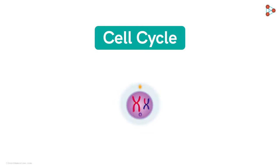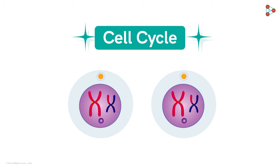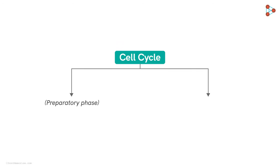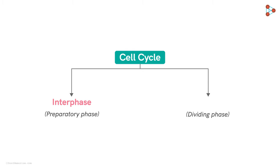Cell cycle is one of the most breathtaking processes that helps the cell to not only grow but also divide. A cell cycle has two major phases: one helps in the preparation of the cell for the division — that's the interphase — and the other carries out the scission of the cell, called the M phase, where M stands for either mitosis or meiosis.